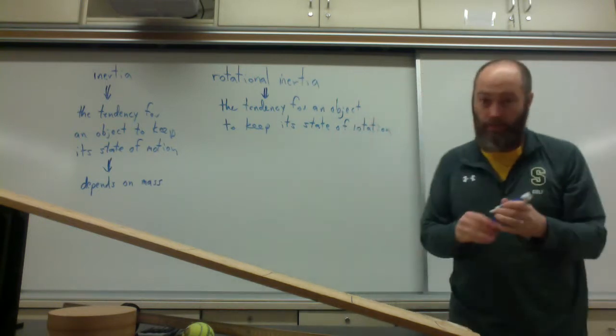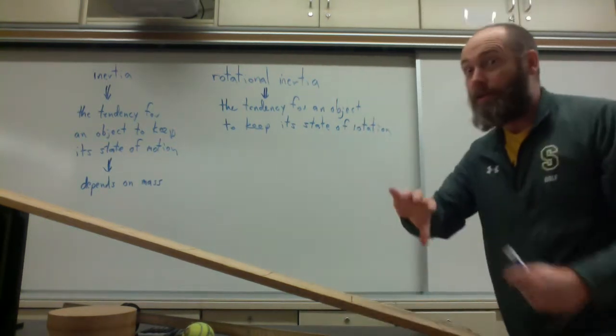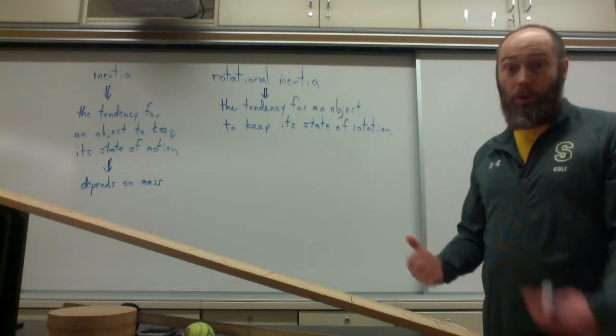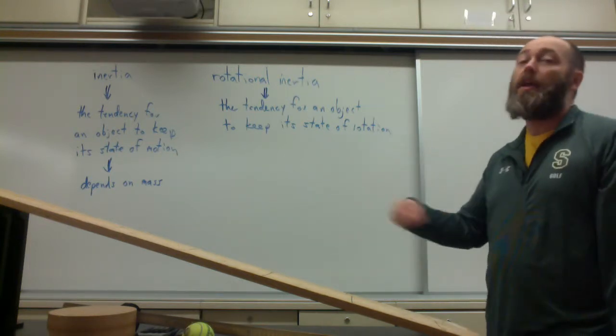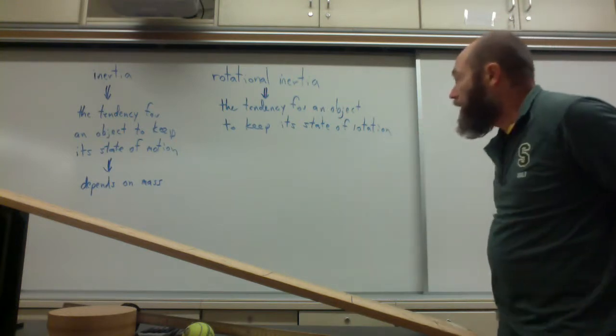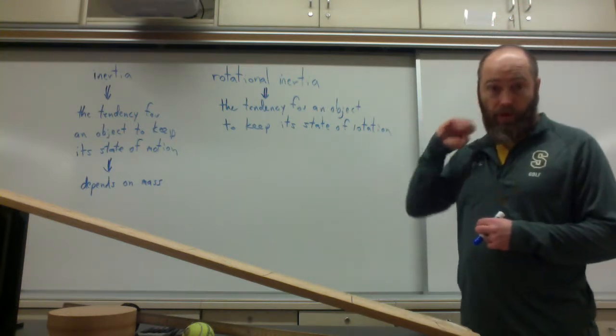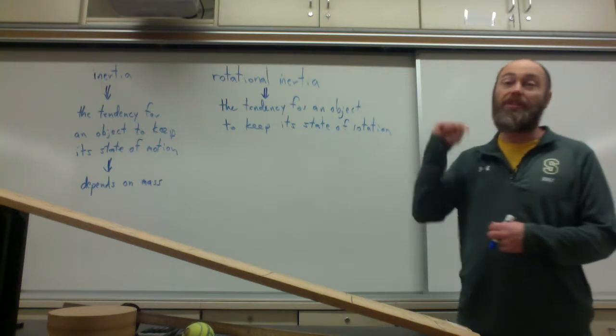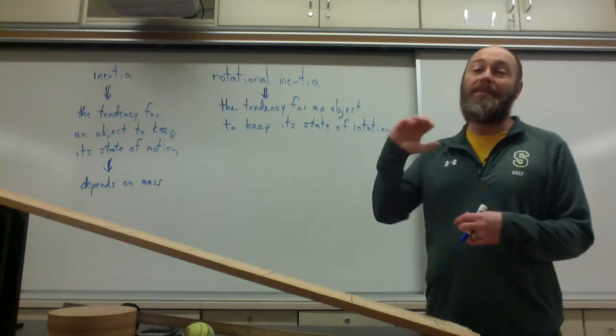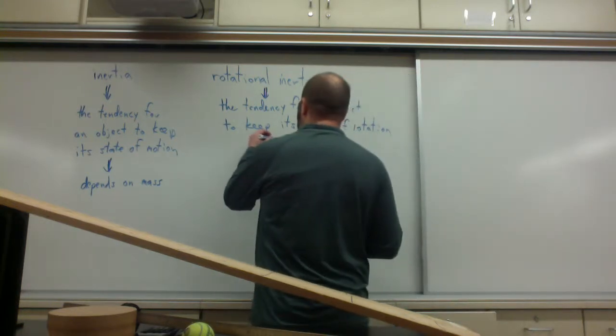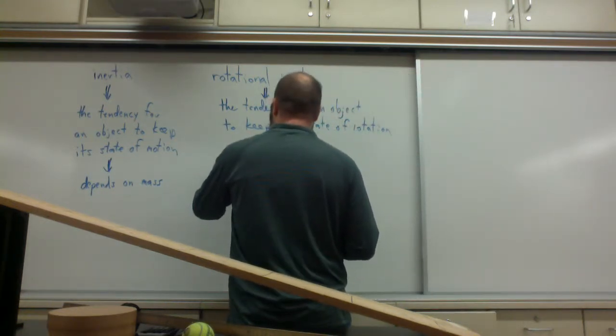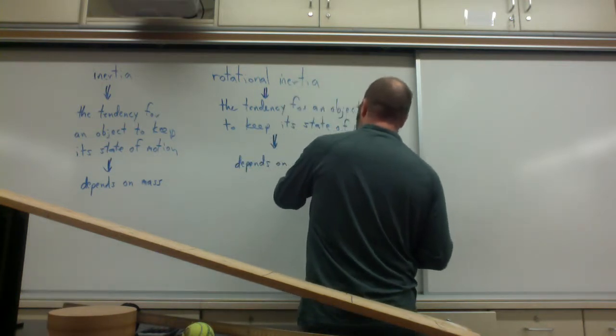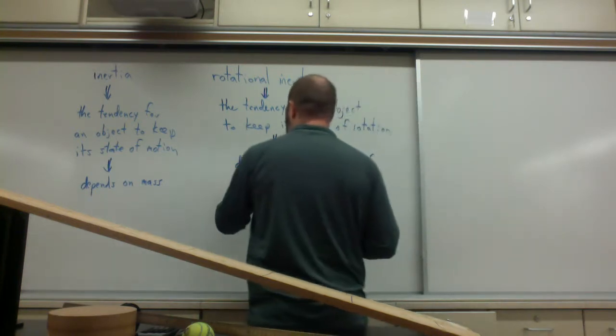What does that mean? If an object is not rotating, it's going to stay rotating. If an object is rotating, it's going to stay rotating at a constant rotational speed. Now, here's the big difference, though. Where inertia depends on mass, rotational inertia depends on the mass, but it also depends on the distribution of the mass.